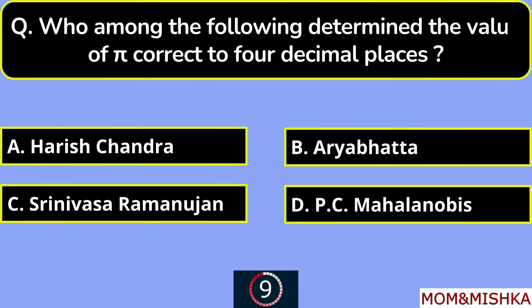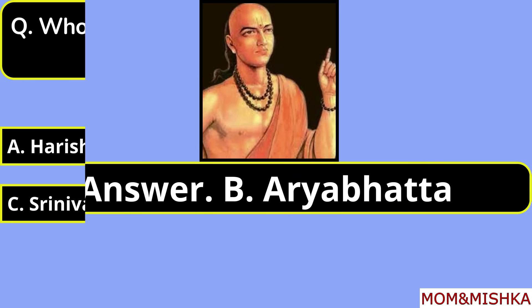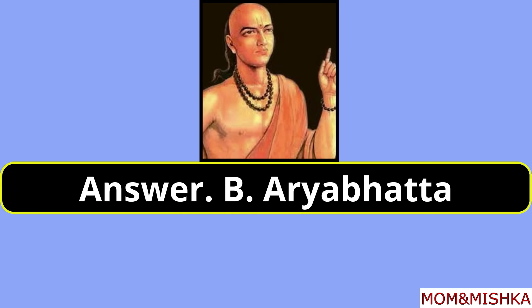Who among the following determined the value of Pi correct to 4 decimal places? The answer is Aryabhata. Option B.